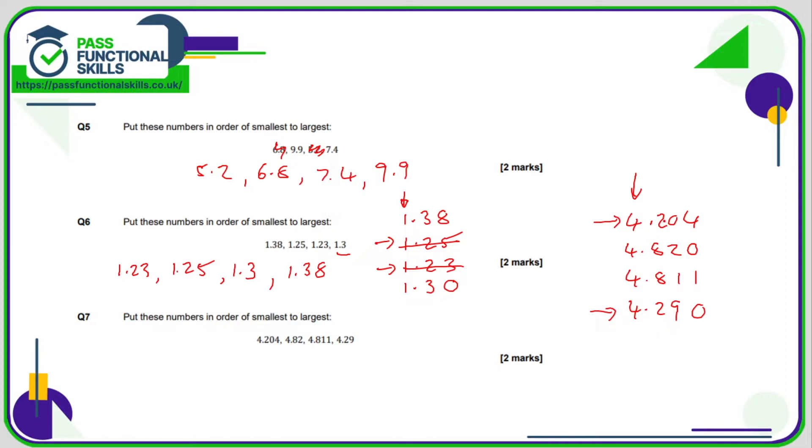Let's look at the next column which is going to be the hundredths column. We've got a 0 and a 9. 0 is smaller than 9, so this number here is the smallest. So 4.204, that's the smallest number. Therefore the next smallest is going to be the 4.290.